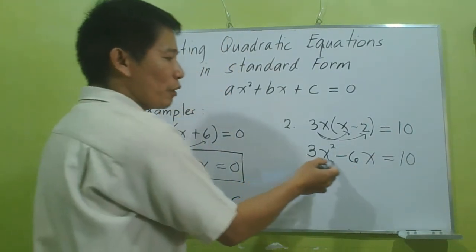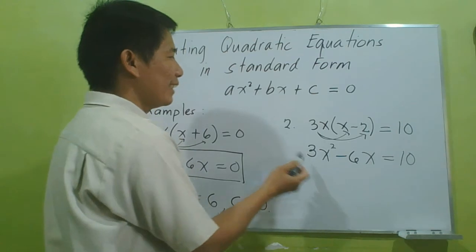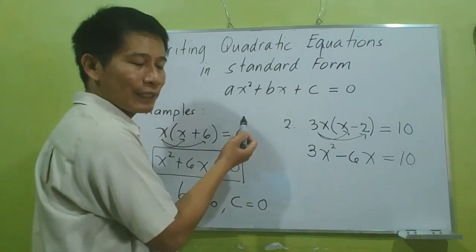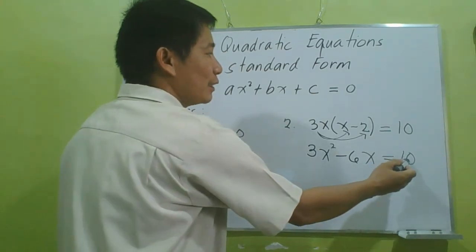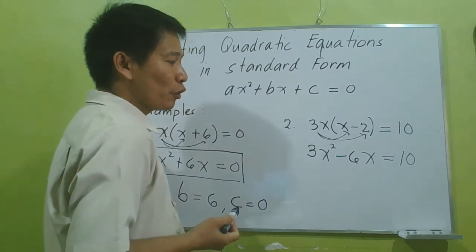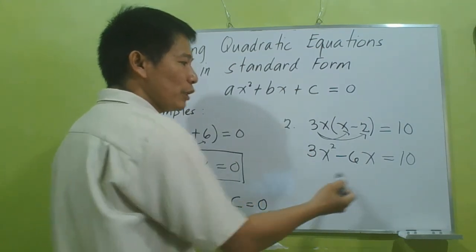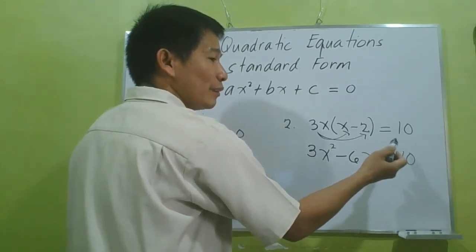Observe that the resulting equation is not yet in the standard form. Why? Because the right side is not 0. So our next objective is to make this right side 0.